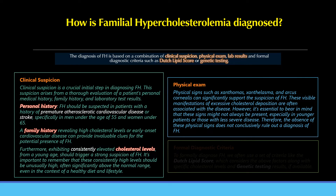Physical exam: Physical signs such as xanthomas, xanthelasma, and arcus cornealis can significantly support the suspicion of FH, as these are visible manifestations of excessive cholesterol deposition. However, it's essential to bear in mind that these signs might not always be present, especially in younger patients or those with less severe disease. Therefore, the absence of these physical signs does not conclusively rule out a diagnosis of FH.